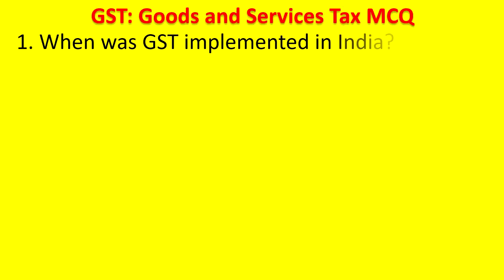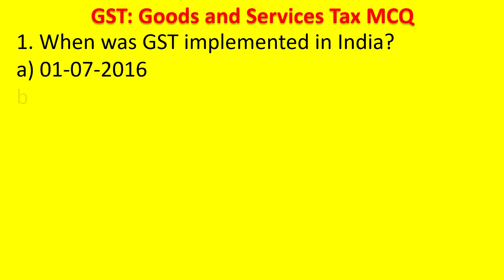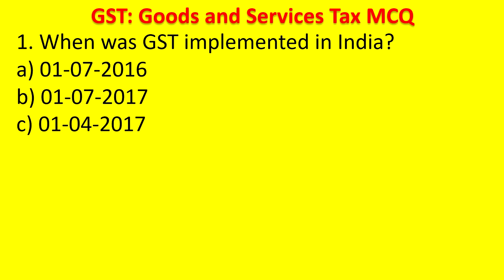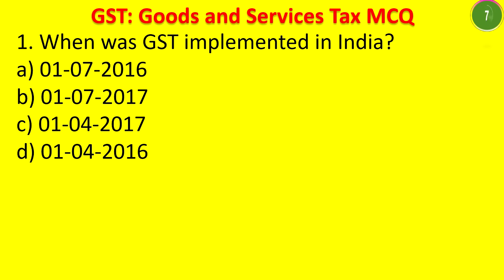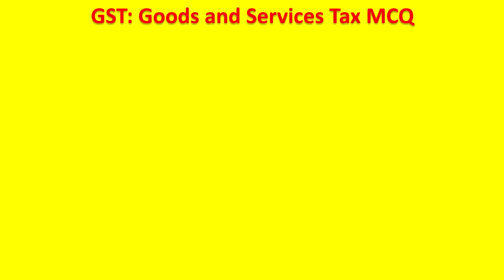First question: When was GST implemented in India? Options: A. 1-7-2016, B. 1-7-2017, C. 1-4-2017, D. 1-4-2016. The answer is 1-7-2017, and it is also called GST Day. GST Day is observed on 1st July of every year.